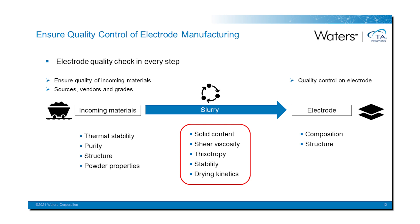Generally, all these powdered solids get mixed and dispersed in a solvent to form a slurry. Important aspects of the slurry that should be characterized to ensure an efficient process and consistent product include solid content, shear viscosity, thixotropy, and stability — both resistance to settling and degradation over time — as well as drying kinetics. We'll talk about how rheology can be used to assess shear viscosity, thixotropy, and stability of these slurries.